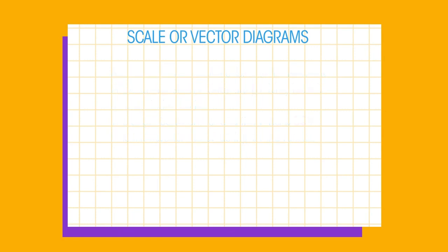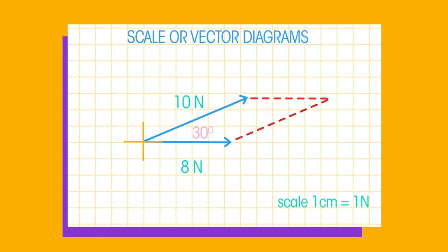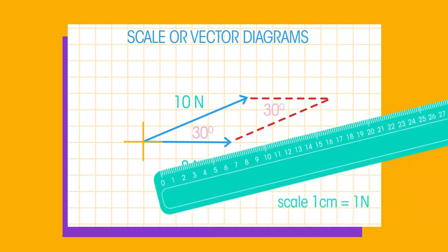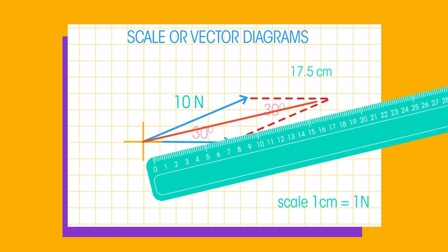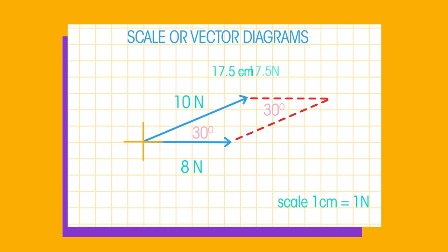Step 1: Decide on sensible units. 1 cm equals 1 newton. Draw the first force. Step 2: Draw the second force at the correct angle. Step 3: Connect the lines by drawing a parallelogram. Step 4: Measure the line from the start to the opposite corner. Use your scale to work out the magnitude of the force. For example, 17 cm equals a resultant force of 17 newtons.